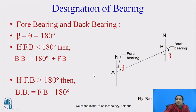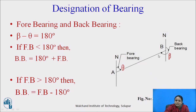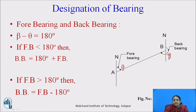Fore bearing and back bearing: in this figure, there is one line AB — the survey line AB — with the north direction indicated. When we move from station A to station B, it is called the fore bearing of line AB, and it is measured with respect to the north direction in a clockwise direction. For the same line, if we measure starting from station B to station A, it is called the back bearing of line AB.